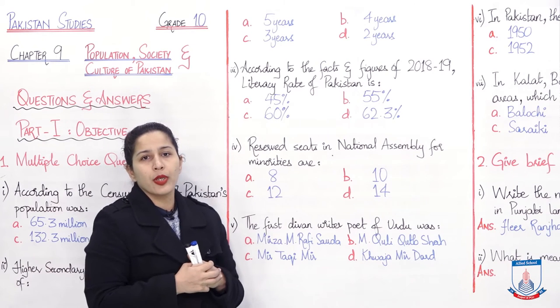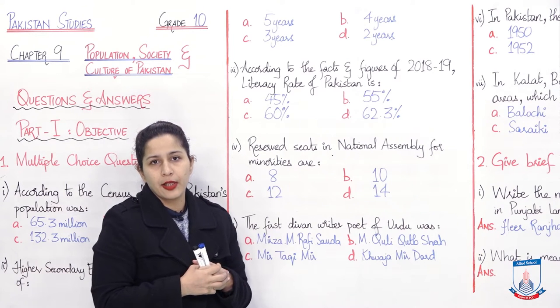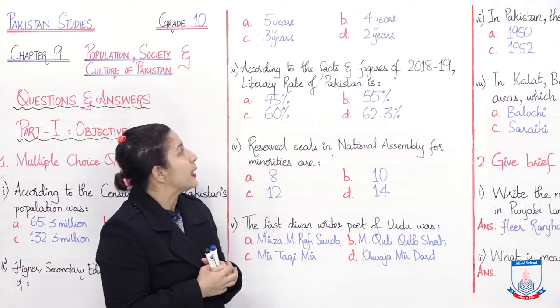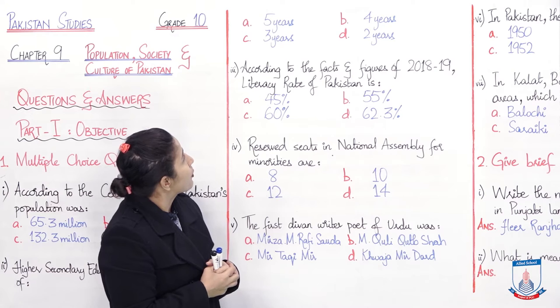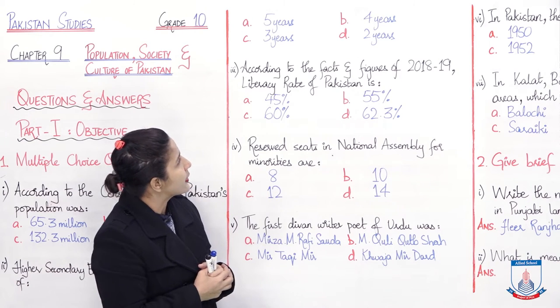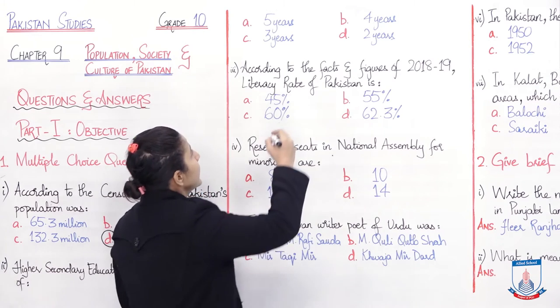Second question: Higher secondary education has a course duration of? Higher secondary education, which is the third level in educational structure. At this level, how many years is the education? We have four options: five years, four years, three years, and two years.